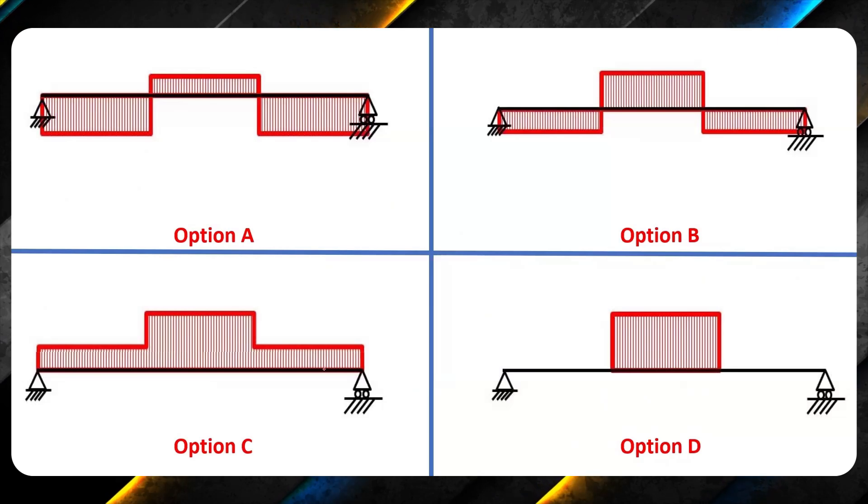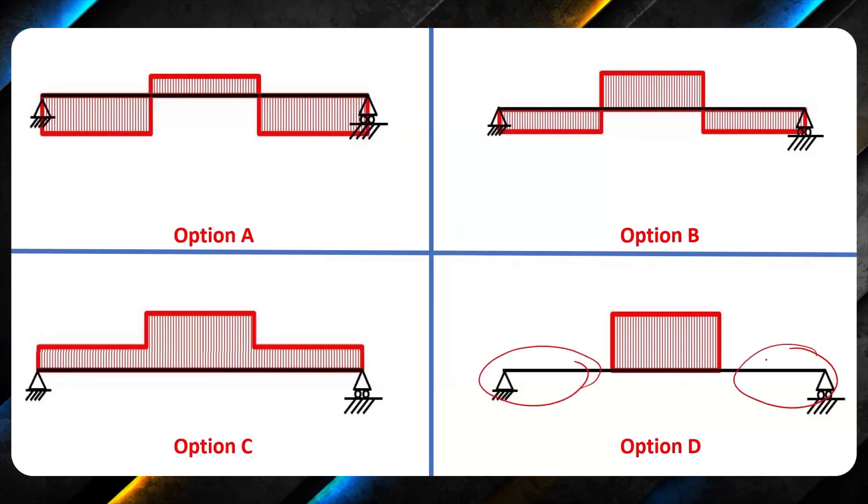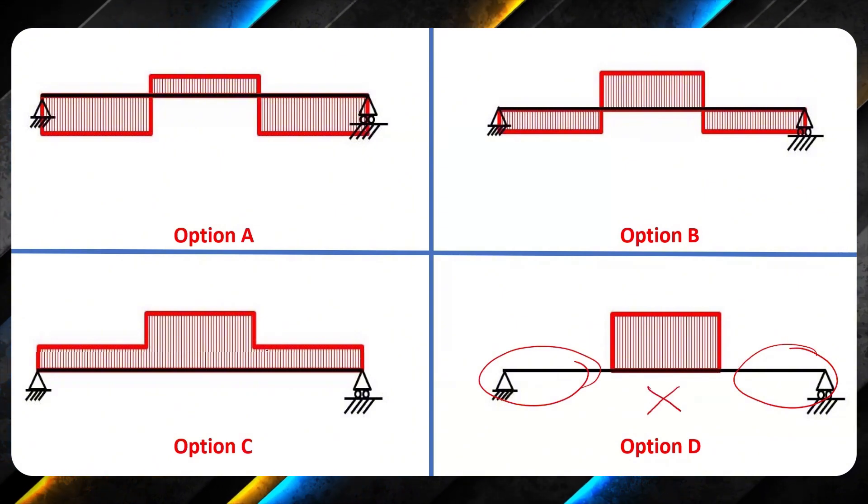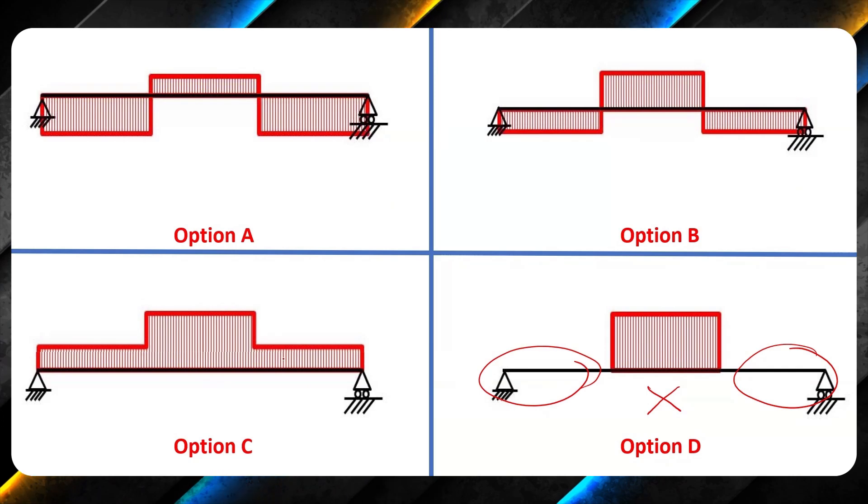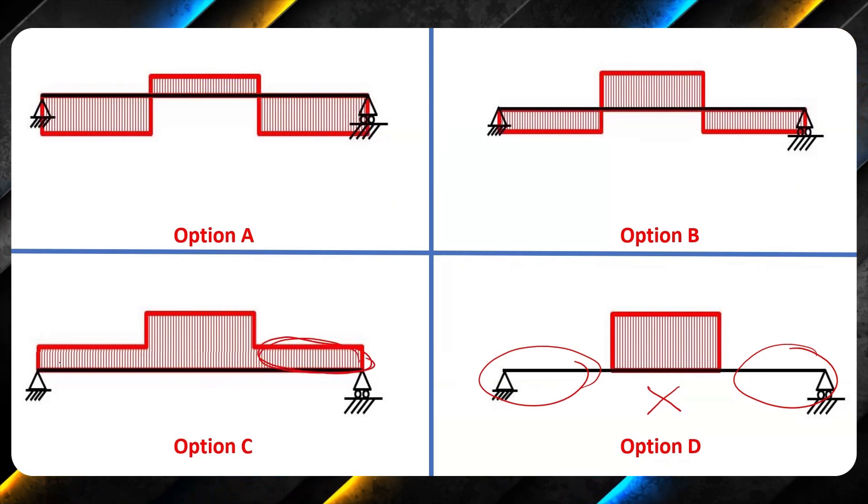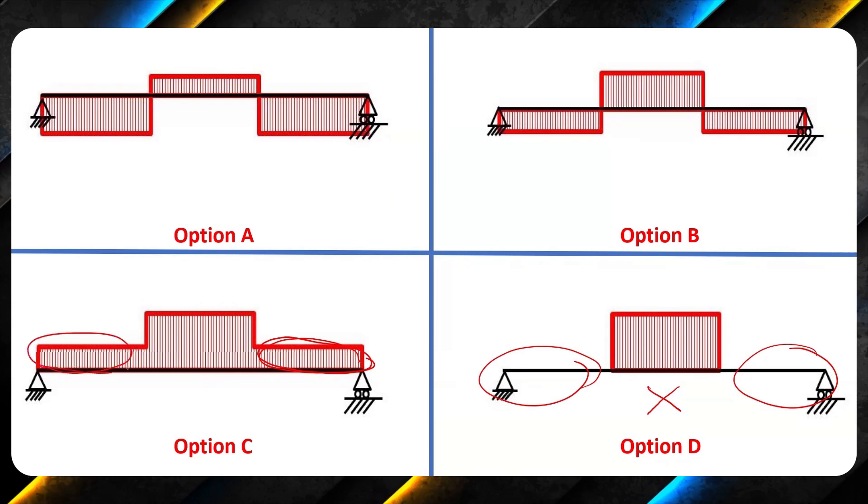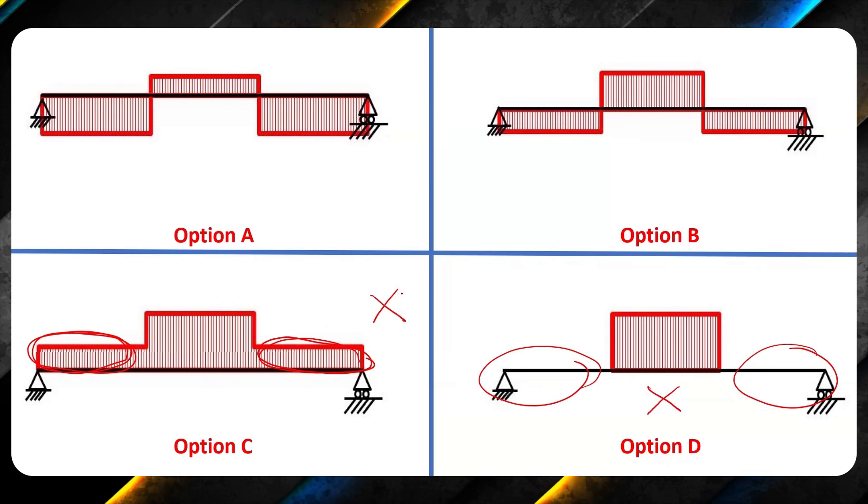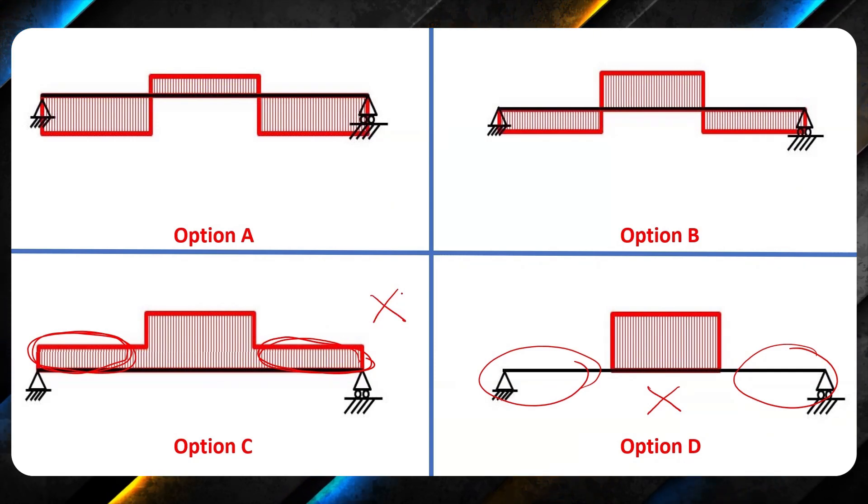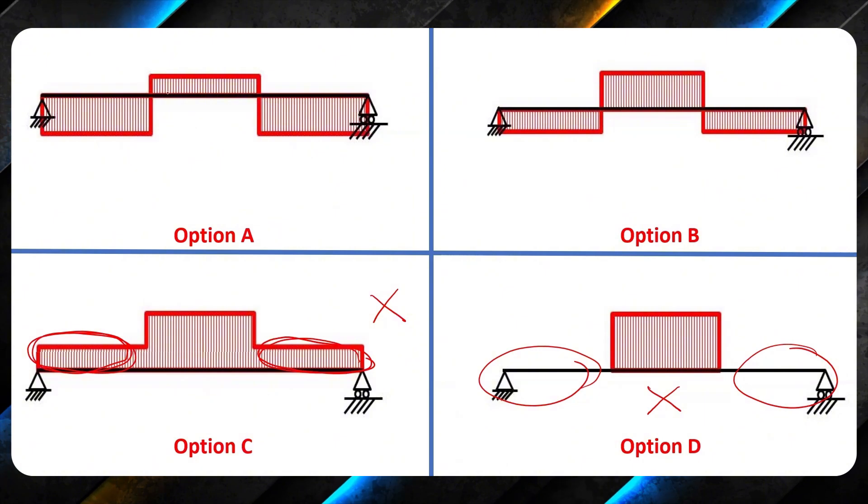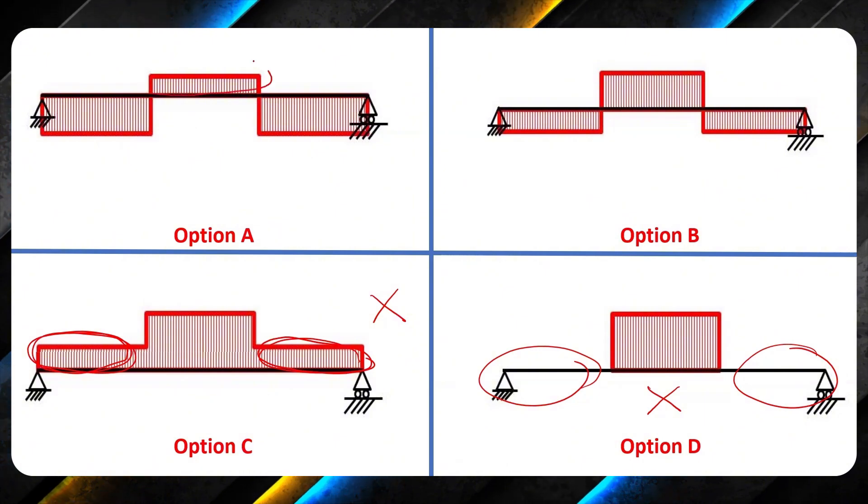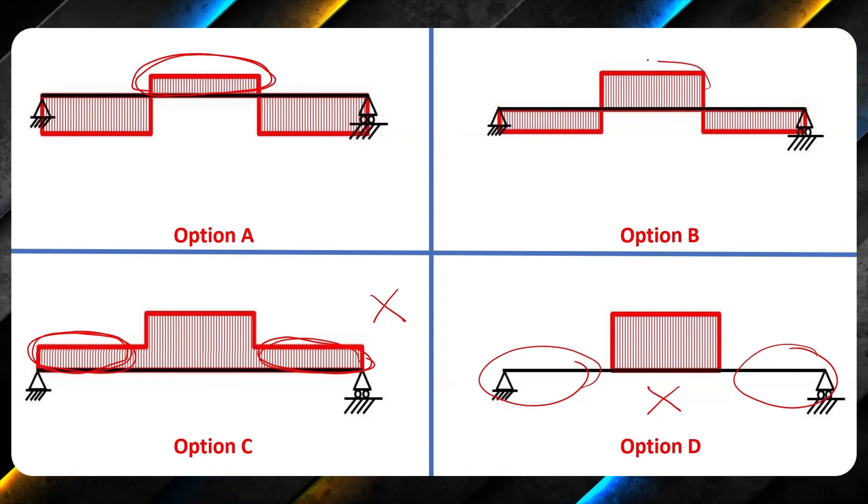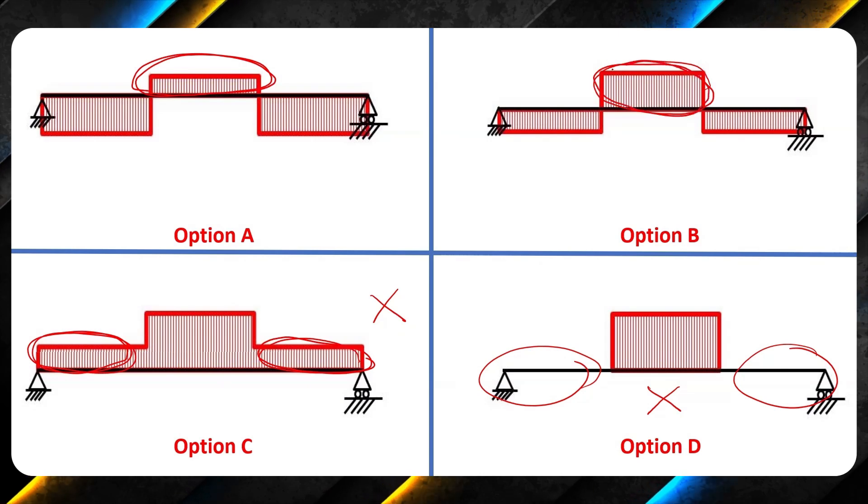As we have some forces over here, this portion cannot be zero. It means this option is incorrect. As we had forces, these two forces were clockwise means negative, so they should be drawn on the negative side. So this option is incorrect as well. Now we have a choice between option A and option B. And I think option B is correct because pay attention over here, here shear force is less, but here shear force is more.